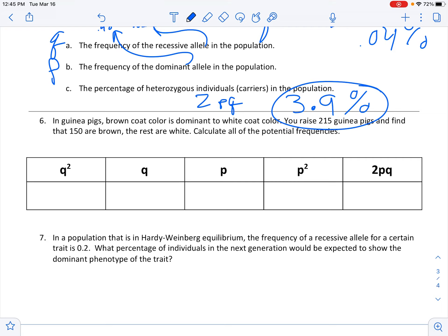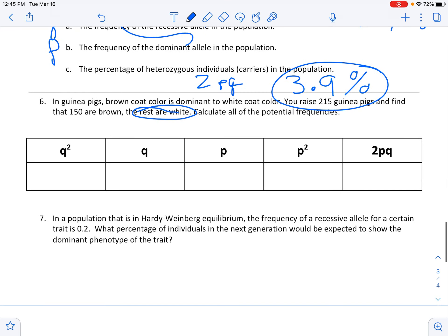So again, if you have the dominant phenotype, you're either heterozygous or homozygous. So that's why I always start with the recessive phenotype. So how many, in terms of percent, are the white phenotype.